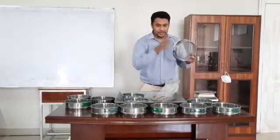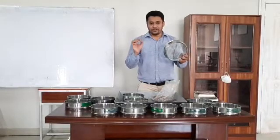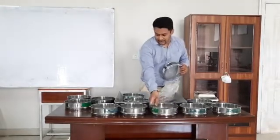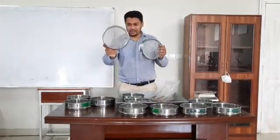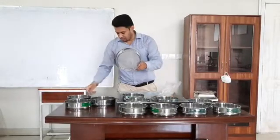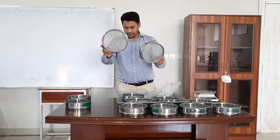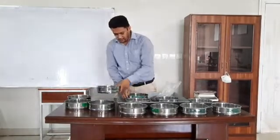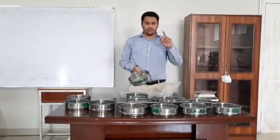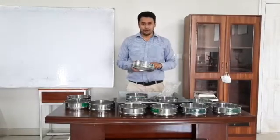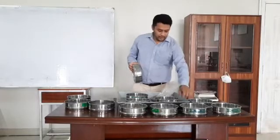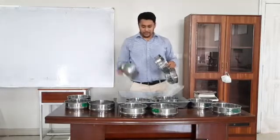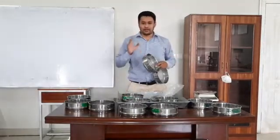As the sieve number increases, the size of the opening reduces — sieve number 16 opening is smaller than number 14, and sieve number 200 has the most refined opening. When selecting your sieves, don't forget to select the 3 main sieves: sieve number 40, sieve number 10, and sieve number 200. These 3 sieves are very important for the grain size distribution study.